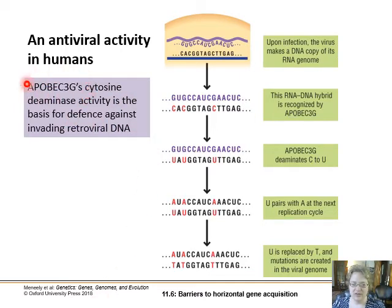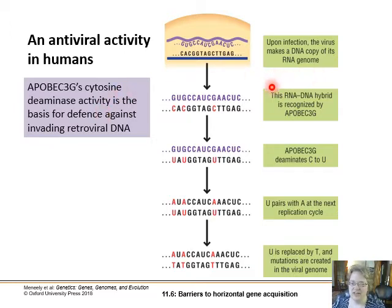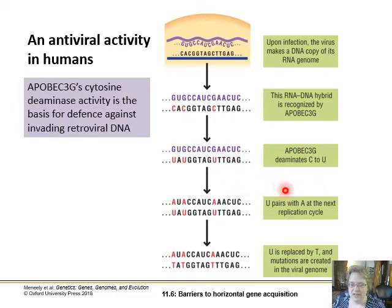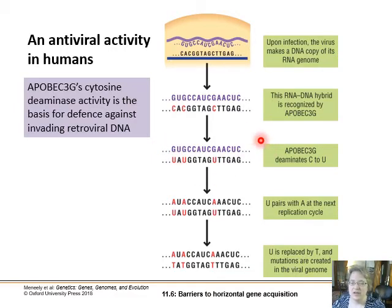In humans we have some interesting antiviral defenses, particularly an enzyme that binds to an RNA-DNA hybrid. When a retrovirus is taking its RNA and converting it into DNA, forming an RNA-DNA hybrid, this protein binds to it and deaminates cytosines — it rips off that extra nitrogen group, converting cytosine to uracil. When that gets replicated, the uracil pairs with adenine and the viral code is all messed up, rendering that virus code inoperable. We see this in regions of our own genome that look like they could have been retroviruses at some point but have been mutated into uselessness by this enzyme.